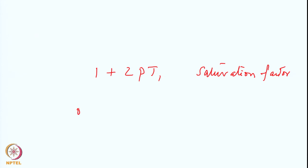We showed that in the steady state, the population difference between the two levels is equal to N naught divided by 1 plus 2PT1, where N naught is the equilibrium population difference between the two states. So if 1 plus 2PT1 is extremely large, then N dash will tend to 0, leading to saturation and no signal observed.